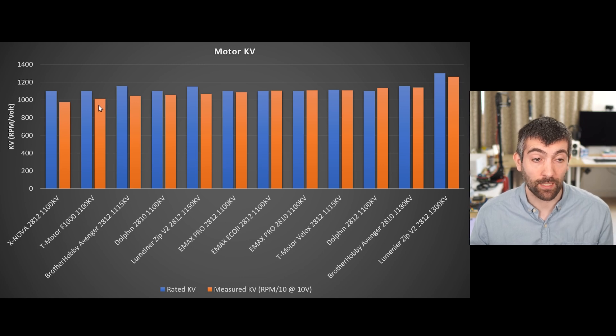The Brother Hobby Avenger also measuring out significantly lower than its rating, but most of the other motors are pretty close to their ratings. It's good when comparing motors to always look at their measured kV because as you can see there can sometimes be a big difference between the measured kV and the rated kV. It remains to be seen whether some of these big discrepancies, particularly on the lower side of kV, are going to have an impact when it comes to the other performance parameters of the motor.